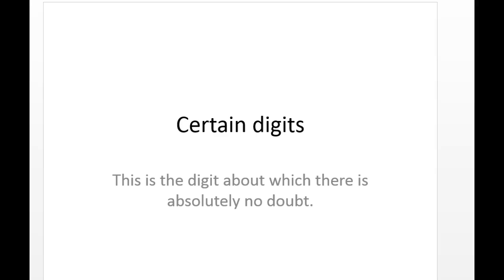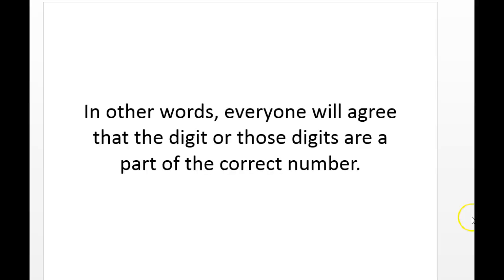We're going to talk about certain digits and non-certain digits. In terms of certain digits, we're talking about the number of digits with which everyone can agree. Everyone can agree that we are not exactly certain of the measurement, but we can all agree that the measurement does go up to this particular point, which is a number. Beyond that, we just estimate, but we can all agree on the certain part.